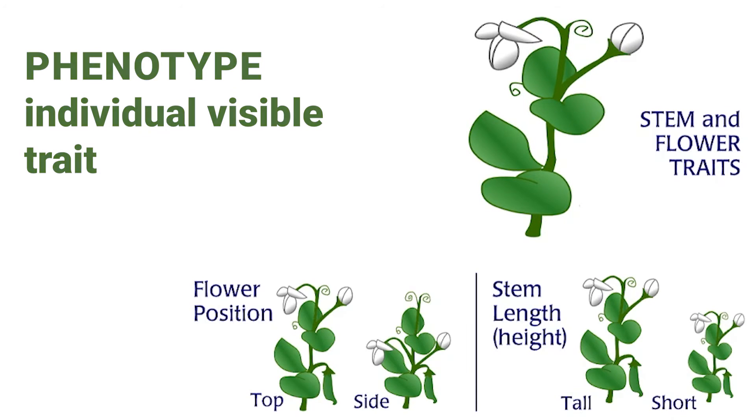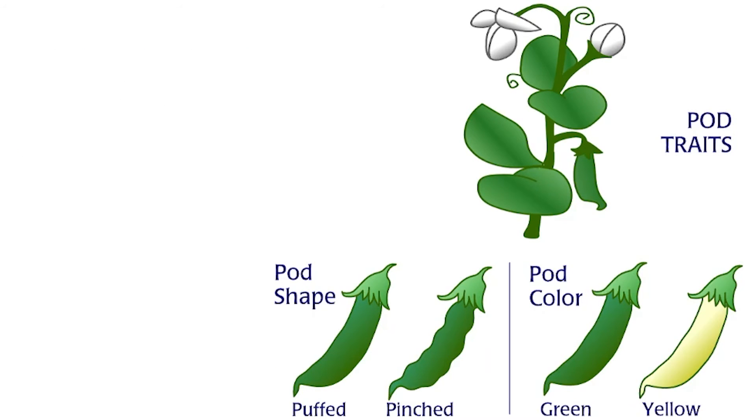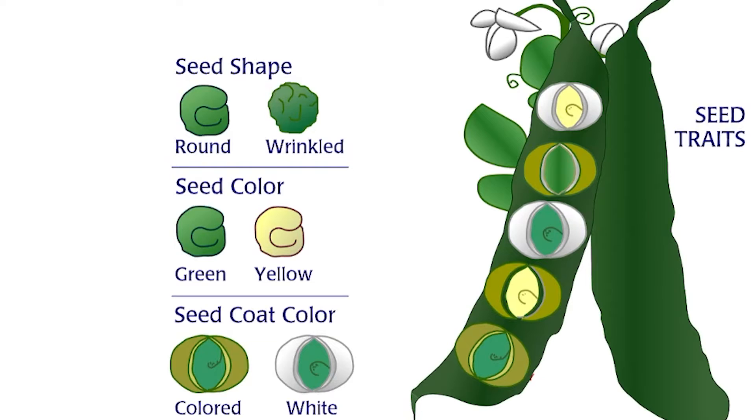Mendel focused on seven individual visible traits, called phenotypes: stem and flower position traits, pod traits, and seed traits, each trait with two visible phenotypes.